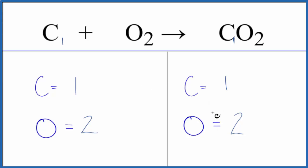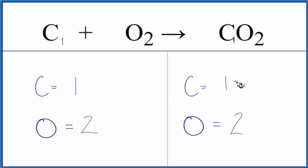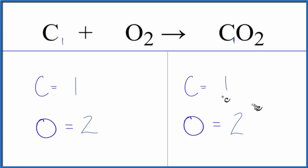When we balance equations, we're trying to get everything to be the same on each side. So here we have one carbon, and here we have one carbon. Here we have two oxygens, and here we have two oxygens. So if these are the same, we say the equation is balanced.